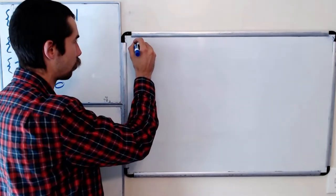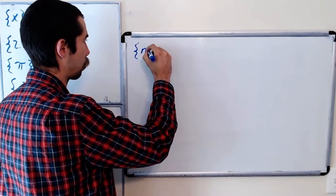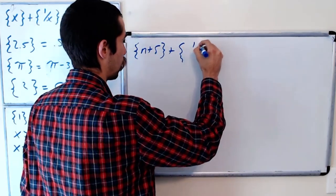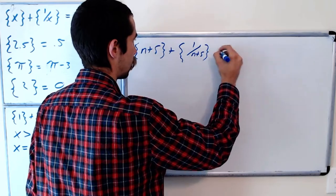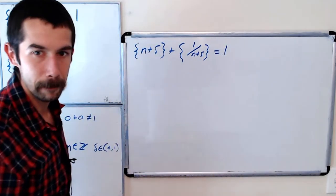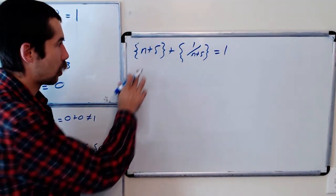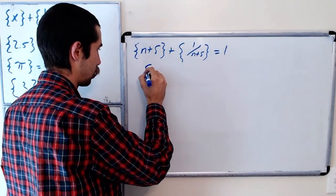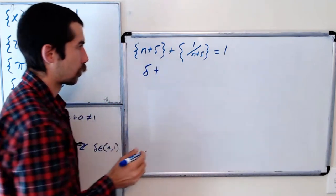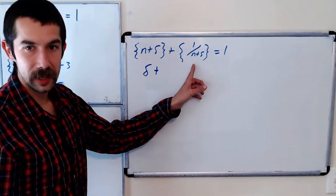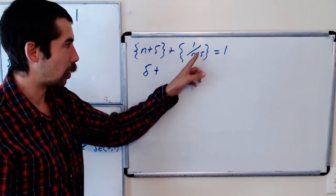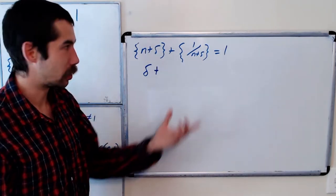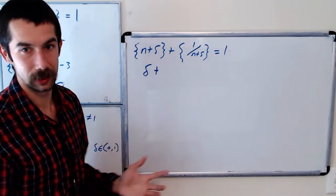Okay so what we want to solve is bracket of n plus delta plus bracket of 1 over n plus delta is equal to 1. Okay what's bracket n plus delta? That's just delta. What's the decimal part of 1 over n plus delta? Well 1 over n plus delta is between 0 and 1 so itself is the decimal part.